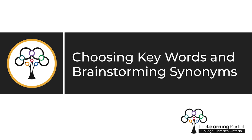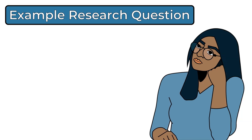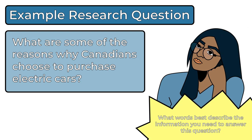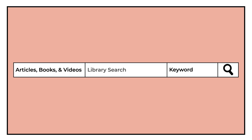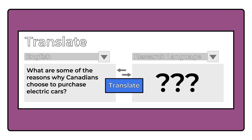Choosing Keywords and Brainstorming Synonyms. Now that you have done some planning and come up with a good research question, you want to think of some words and phrases that describe the information you need. These words and phrases are called keywords, or search terms, and they are what you will use as you search for information. You can think of this stage of the research process as translation — you are taking your research question and translating it into a language that will make sense to the search tool you are using.